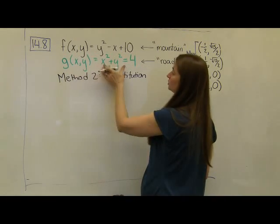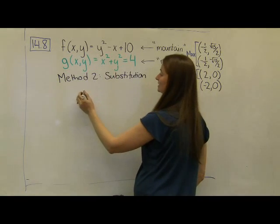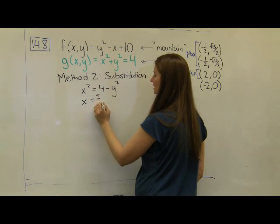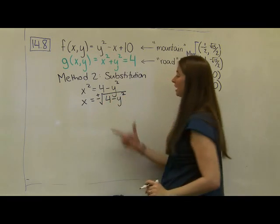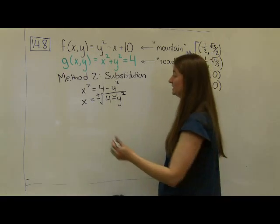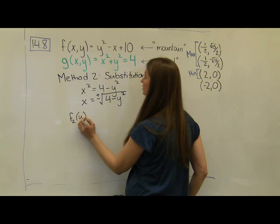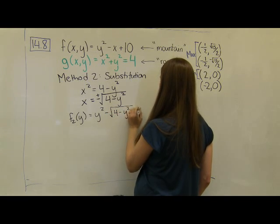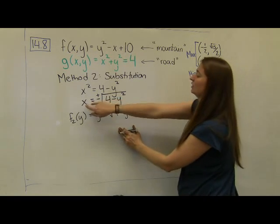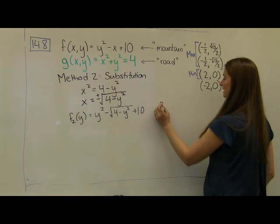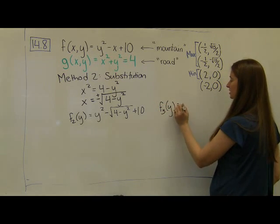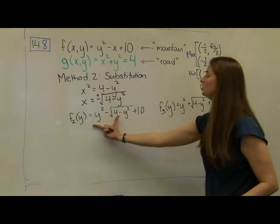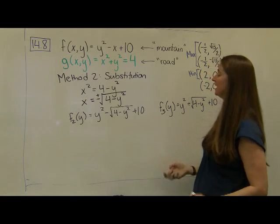So, I'm going to do it again, only this time I'm going to use my constraint function and I'm going to solve for x. Because if I solve for x in this case, I see that x² is equal to 4 minus y², and so that means that x is equal to ±√(4 - y²). I'm going to use this value to plug into this function even though it's much, much more messy. I'll call this my f₂ function. It's just going to be a function of y and it's going to be equal to y² - √(4 - y²) + 10. That's one set of equations because that's accounting for when x was equal to the positive square root. And I'm also going to have an f₃ of y function. And this is going to be y² + √(4 - y²) + 10. And these are our new functions.